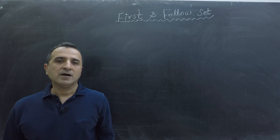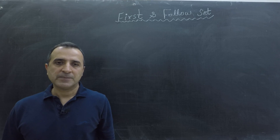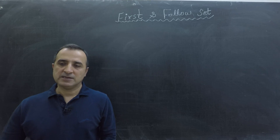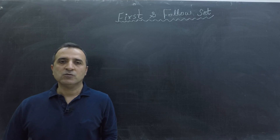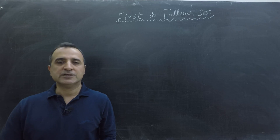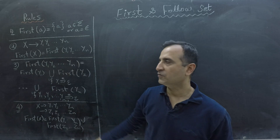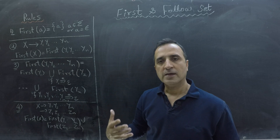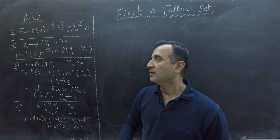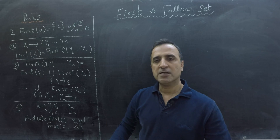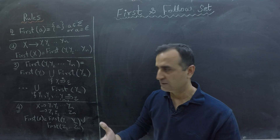In this video we will learn how to find the First Set of a context-free grammar. We will first list down all the rules and then do an example to see those rules in action. Here are our four rules that we can use to find First of any terminal or non-terminal of a context-free grammar. We will do an example to understand those rules thoroughly, but let's go through them quickly before we start.